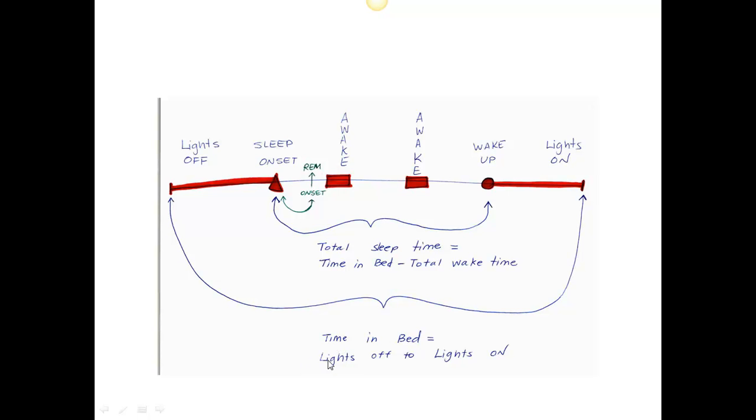Time in bed then is equal to the time from lights off to lights on, that larger segment. Total sleep time is equal to the time from sleep onset to wake up time minus these awakenings within here. Your book does provide a good definition of these.